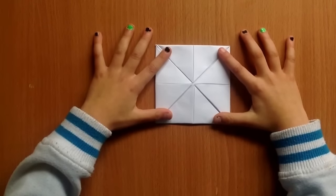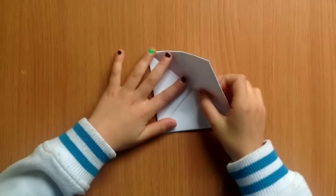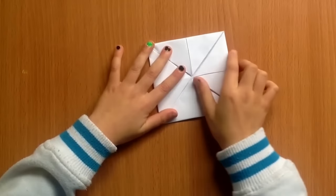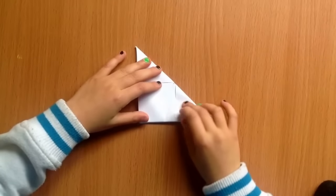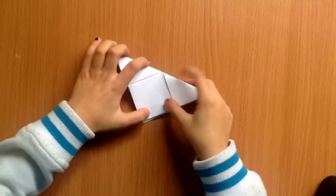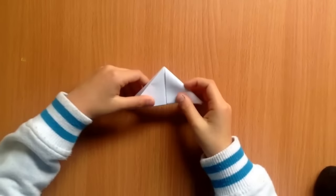Step 4. Fold your square in half when the triangles are inside. Now fold it in half again, like so.